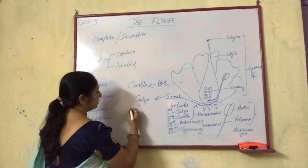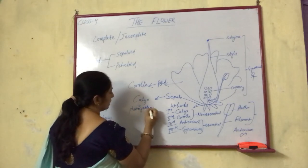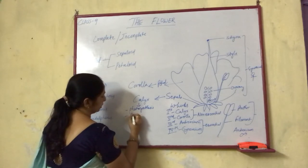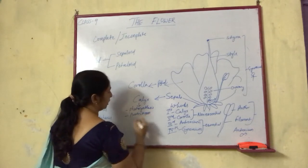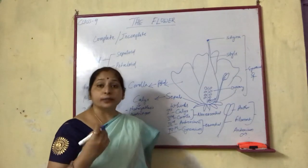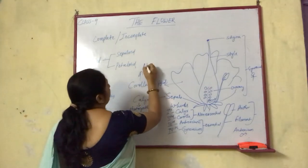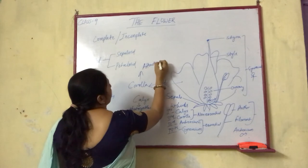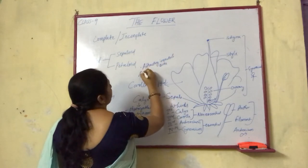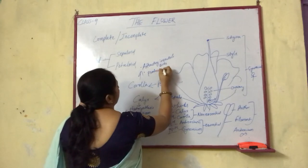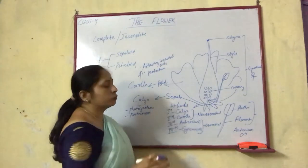The role of calyx: since it is green in color, it helps in photosynthesis, and it also provides protection of the reproductive structures. The role of corolla: since it is a bright colored part, its role is attracting insects and birds. Its second role is protection of the reproductive structures — the androecium and gynoecium.